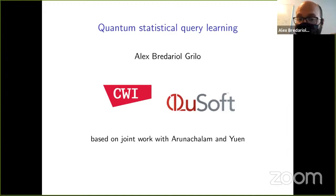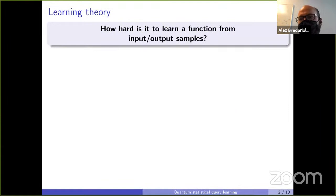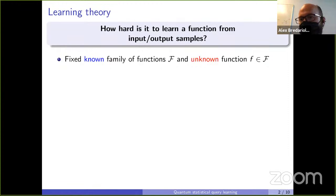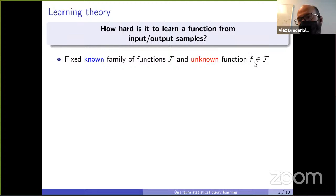The context of our result lies in the field of learning theory, which tries to understand how hard or how easy it is to learn a function when you're just given input and output samples for this function. We have a fixed set of functions F — for instance, all possible linear functions — and we pick some specific function F from this family, which is unknown to the learning algorithm.